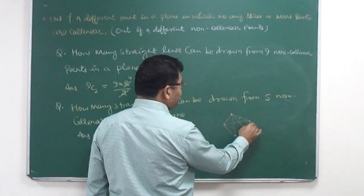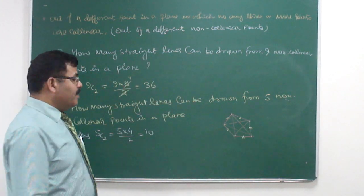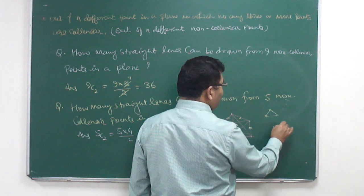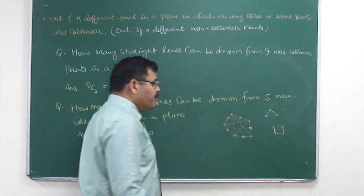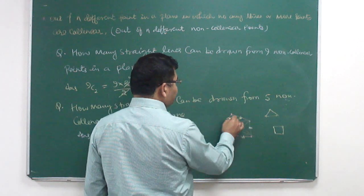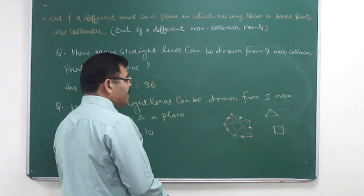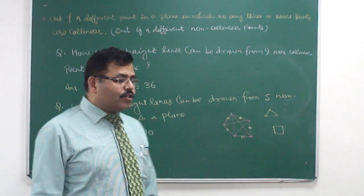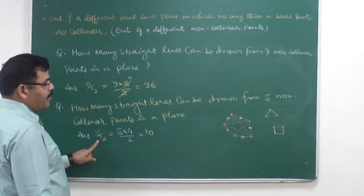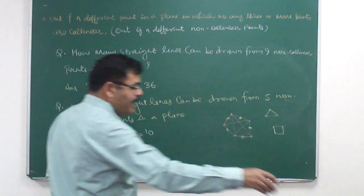But out of those 10 lines, these 5 exterior lines are called the sides — sides of the pentagon. Because 5 points joined together make a pentagon having 5 sides. So these 5 sides are considered to be exterior lines. And apart from these 5 lines out of 10, the remaining 5 lines are considered to be diagonals. So the number of diagonals is 5.